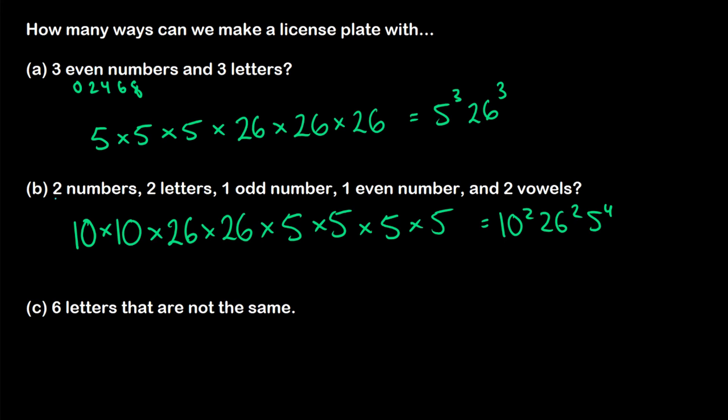Okay. So two numbers was our 10 by 10. Two letters is our 26 by 26. One odd number is our multiplying by five cases. We have one even number as five cases each as well. And then our two vowels are each five cases. So we can see how these numbers line up.